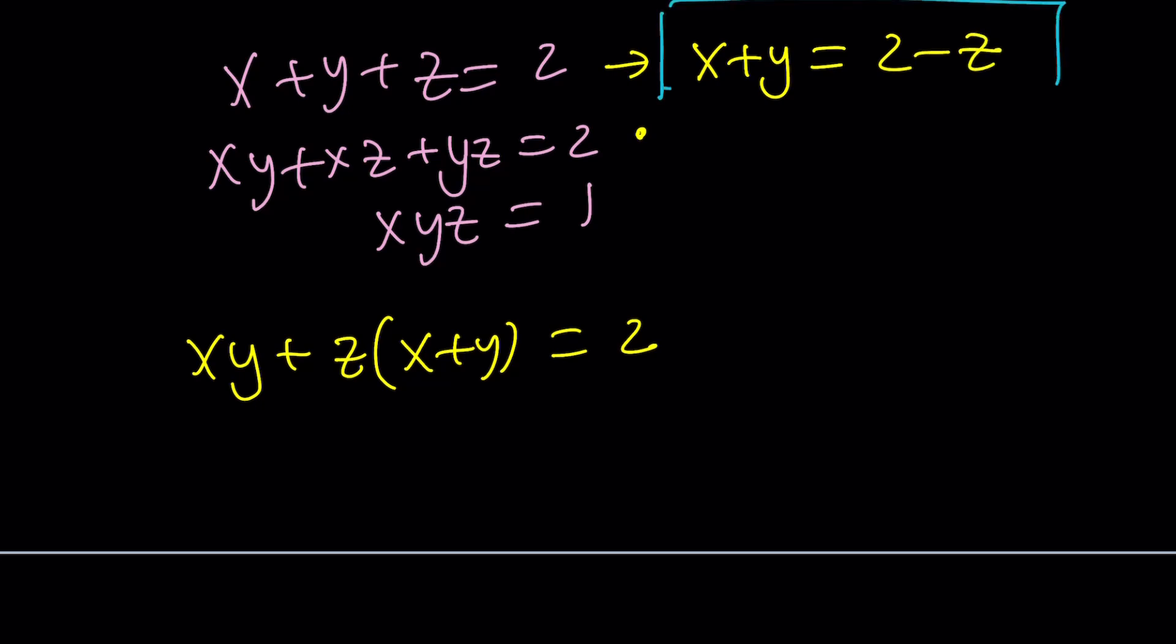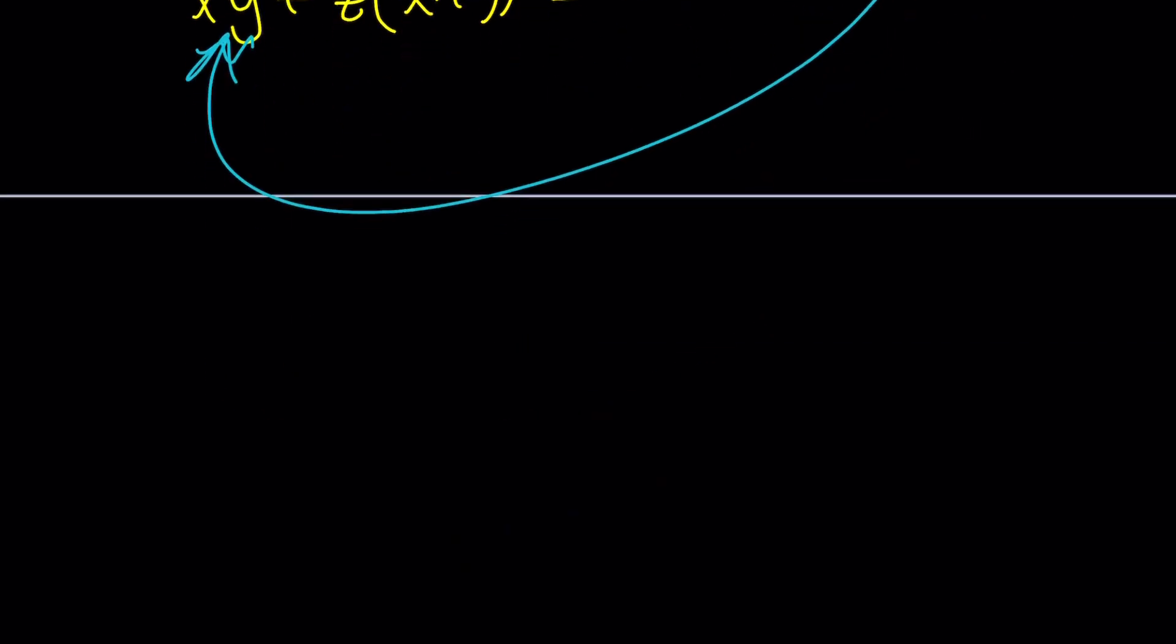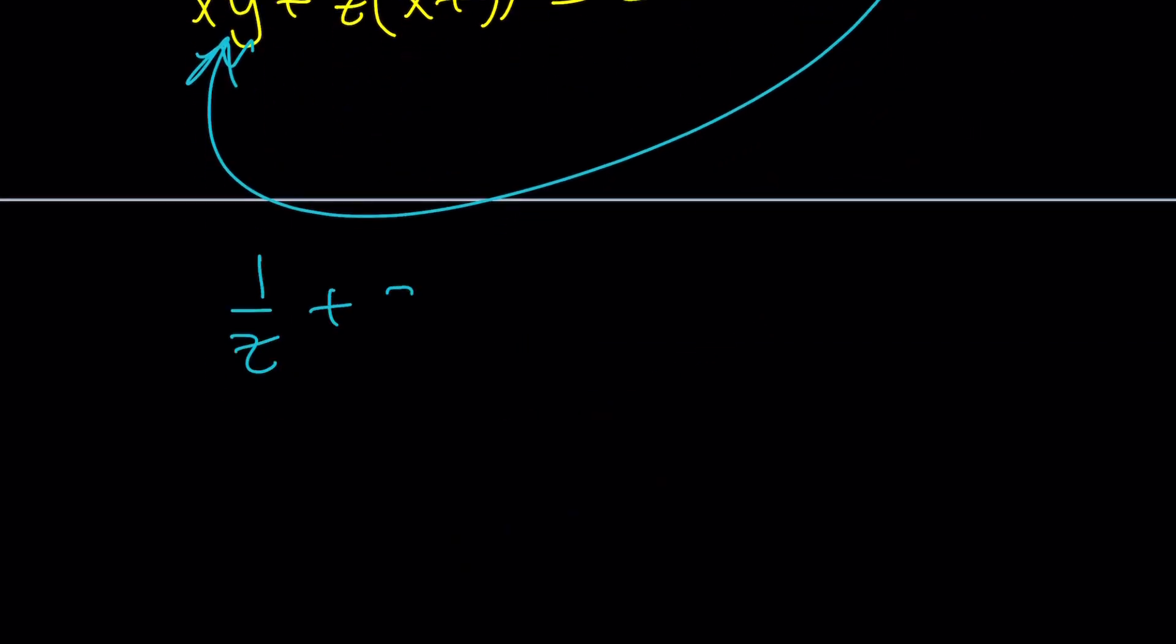And we used this technique before, but we're not using Vieta's formulas. And now, I'm going to go ahead and replace z with that. What am I going to do with xy? Easy. That's going to come from the third. You're going to replace xy with 1/z. And then that will do the trick. And you're all set. Take a look. We're going to be getting 1/z + z(2 - z) = 2. And guess what? When you simplify it, this is going to turn into a cubic equation. Good luck with that.